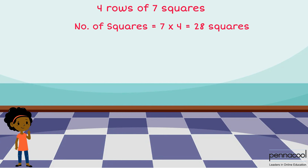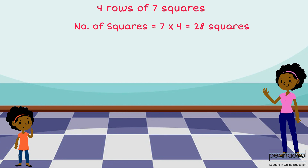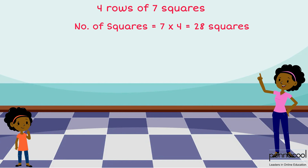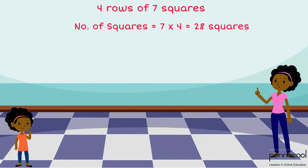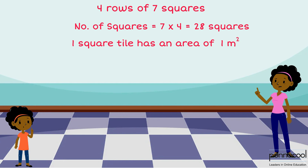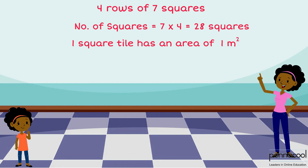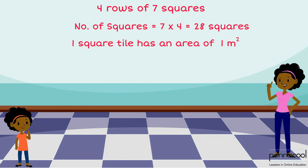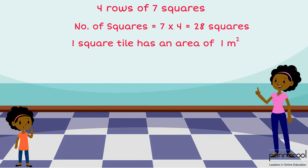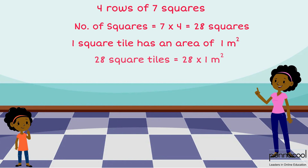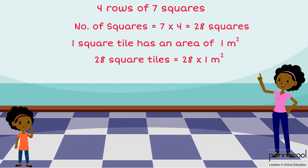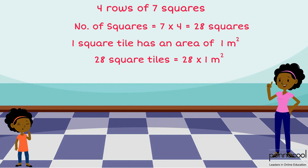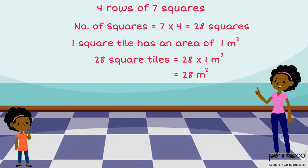Jessica asks her mother what the area of each tile is. Her mother tells her that each tile has an area of 1 meter square. If we have 28 squares, each with an area of 1 meter square, the total area would be 28 multiplied by 1 meter square, giving 28 meters square.